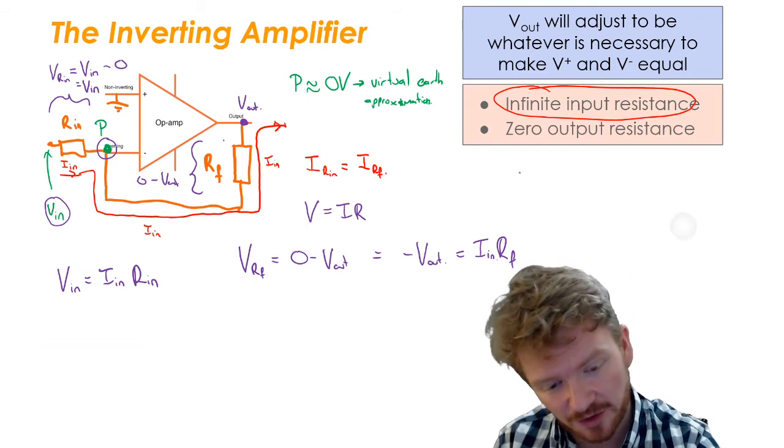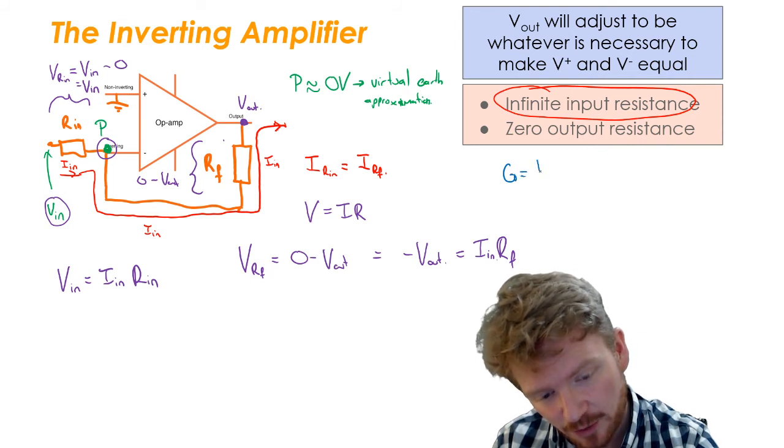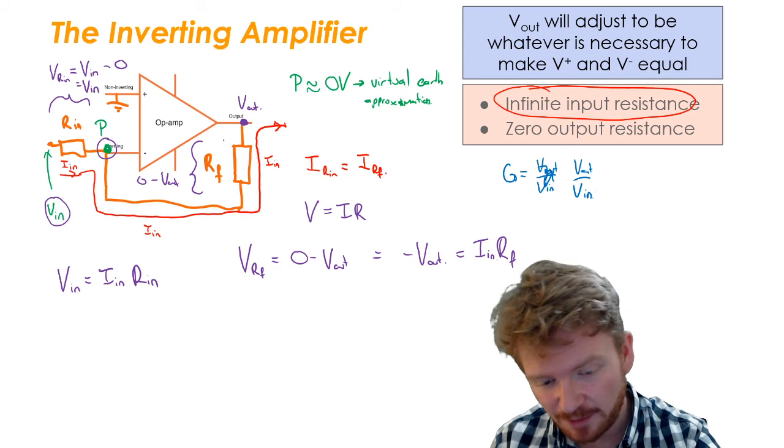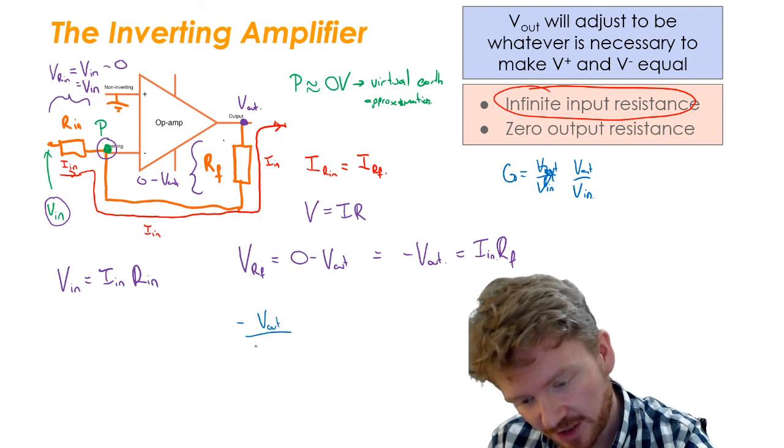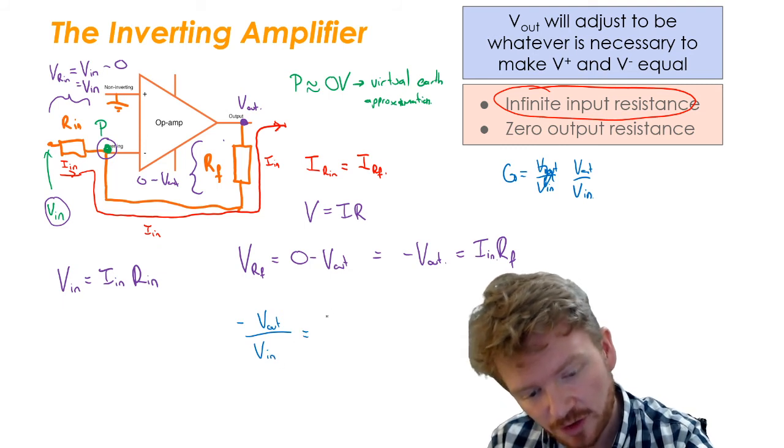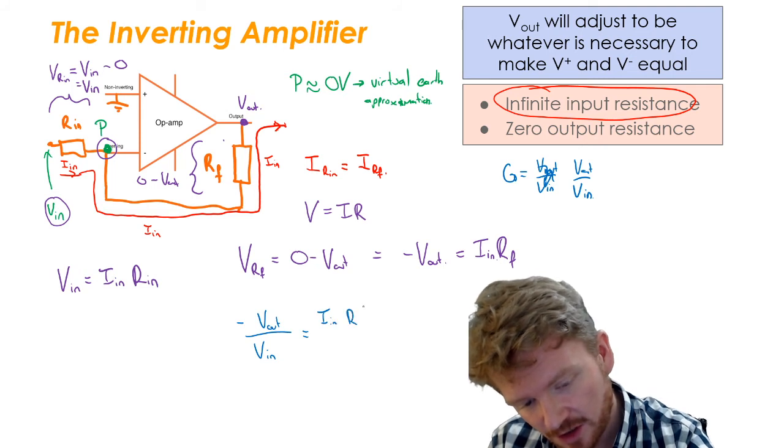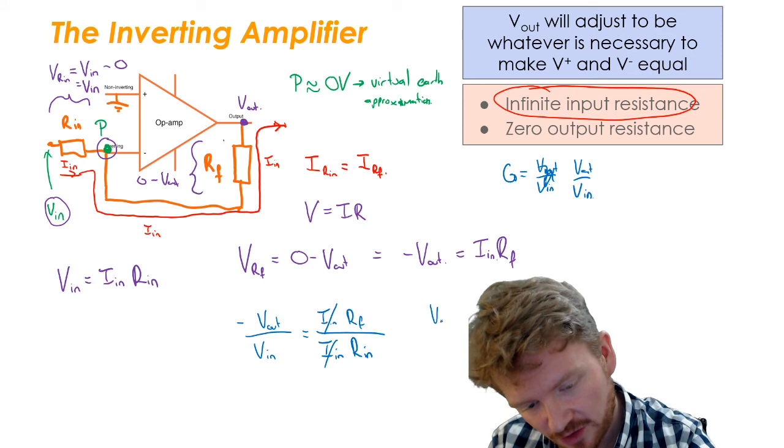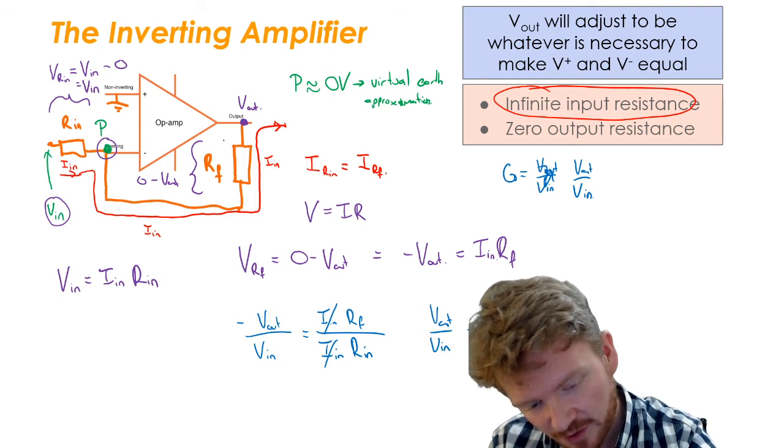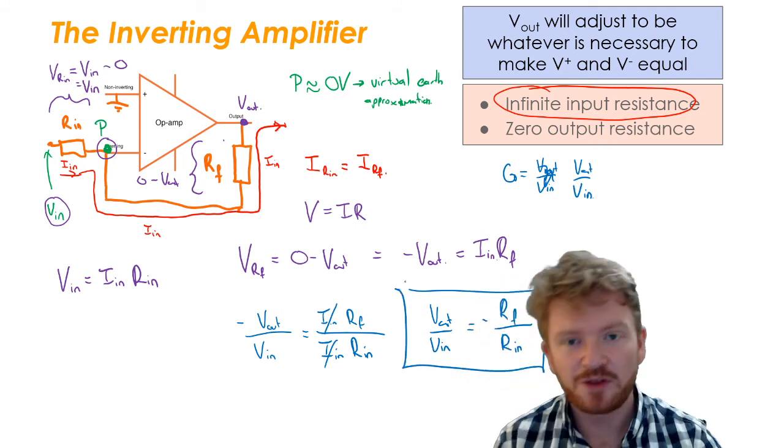Now if we come back to one of the key equations we need, we need to remember that the gain of any system is equal to V-out over V-in. So with that in mind, I'm just going to divide these two by each other so I can say negative V-out divided by V-in is equal to I-in R-f divided by I-in R-in. So if I just do some rearranging, I can see that these two cancel, so I get V-out over V-in is equal to negative R-f over R-in. And this is a key thing I'm going to need to understand.